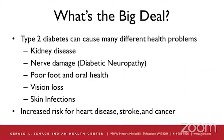So what's the big deal? Well, prediabetes can eventually develop into type 2 diabetes, which can cause many different health problems — for example, kidney disease, diabetic neuropathy or nerve damage, poor foot and oral health, vision loss, and skin infections. In addition, prediabetes also means you have an increased risk for heart disease, stroke, and certain types of cancer such as stomach and colorectal cancer.